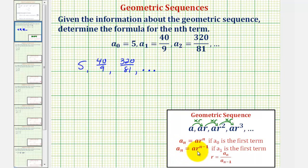And a sub n equals a times r raised to the power of n minus one, if a sub one is the first term. These two equations are equivalent, as long as we use the corresponding value of n.